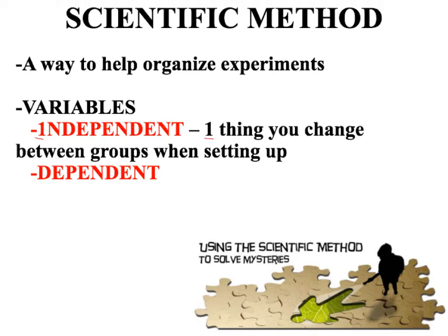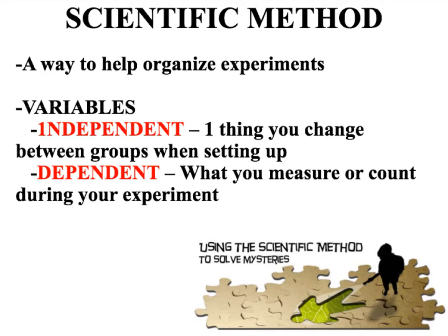Write down the definition and we're going to look at a whole bunch of examples. The other type of variable is called the dependent variable. In an experiment, the dependent variable is what you measure, count, or observe. The memory trick is that the D in dependent reminds me of the D in data, and data is what you're measuring or counting during your experiment.